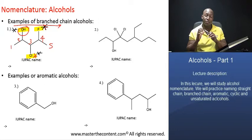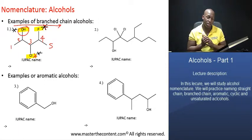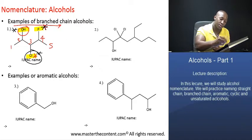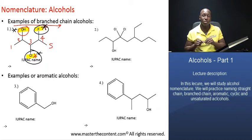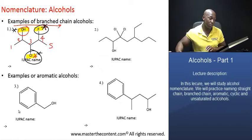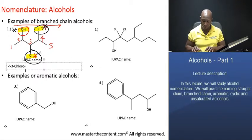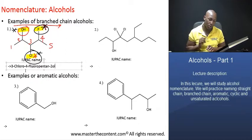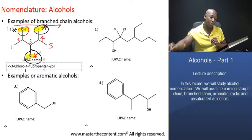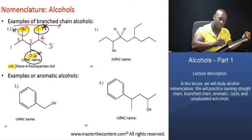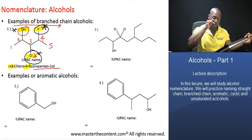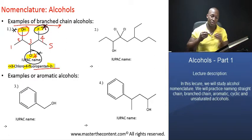Putting all that information together: it's a five-carbon compound and an alcohol, which makes it pentanol — we drop the E and add the suffix, giving a five-carbon chain as pentanol. You also have substituents at positions three and four, which must be included in the prefix of the name. That makes the name of this compound 3-chloro-4-fluoropentan-2-ol. We identified the position of the chlorine atom, the position of the fluorine atom, and the five-carbon chain gives pentanol. The hydroxyl group on carbon two accounts for the 2 in the name.